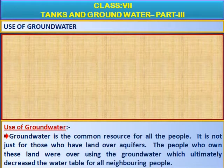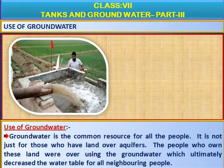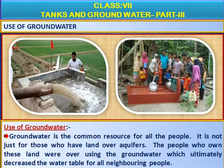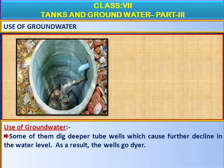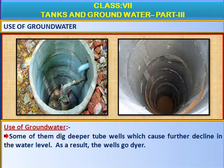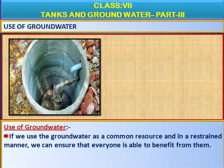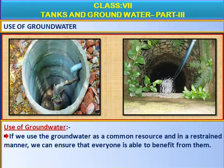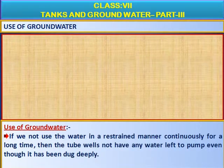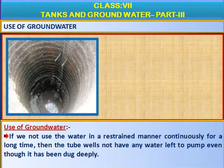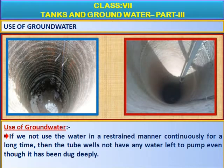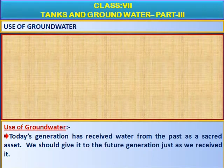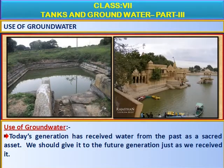Groundwater is the common resource for all the people. It is not just for those who have land over aquifers. The people who own these lands were overusing the groundwater, which ultimately decreased the water table for all neighboring people. Some of them dig deeper tube wells which cause further decline in the water level. As a result, the wells go drier. If we use the groundwater as a common resource and in a restrained manner, we can ensure that everyone is able to benefit from it. If we use the water in a restrained manner continuously for a long time, then the tube wells will not have any water left to pump even though dug deeply. Today's generation has received water from the past as a sacred asset. We should give it to the future generation just as we received it.